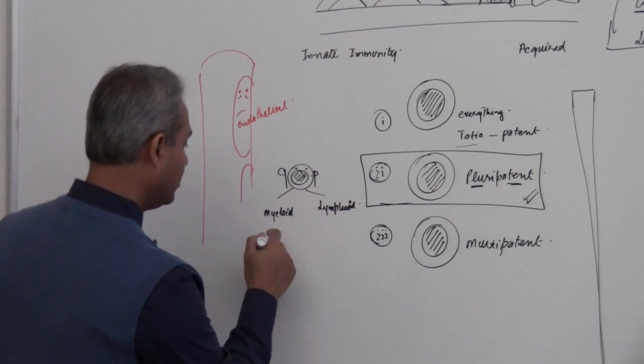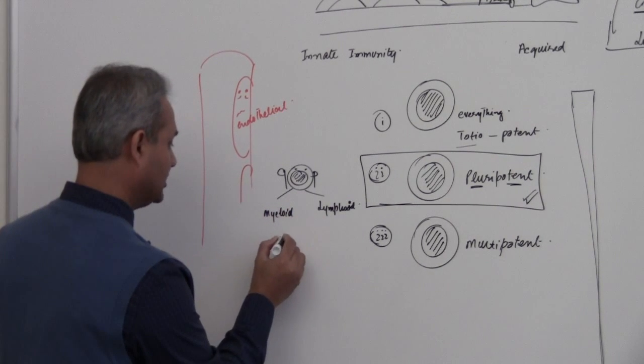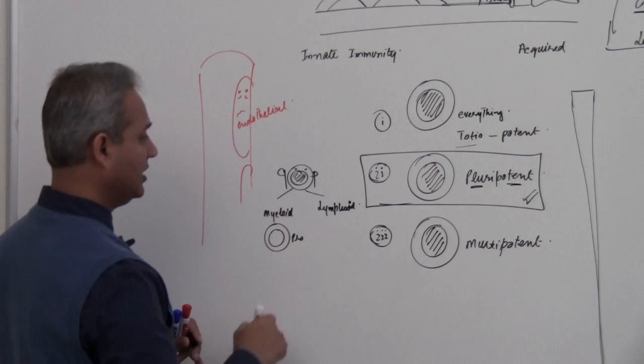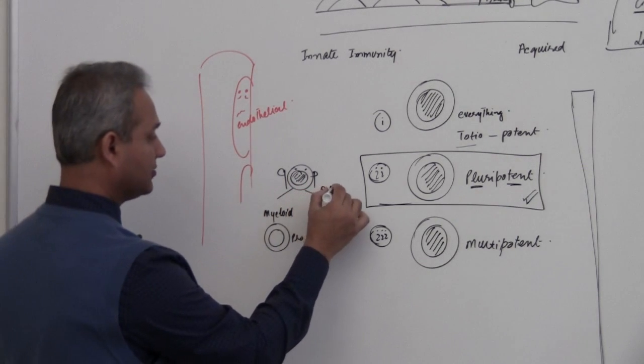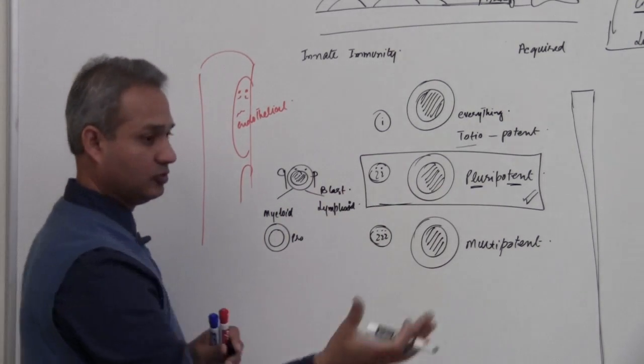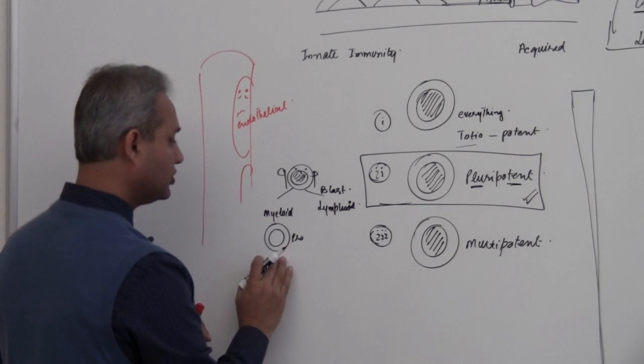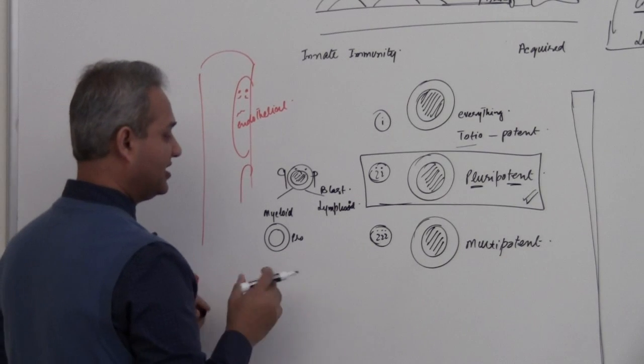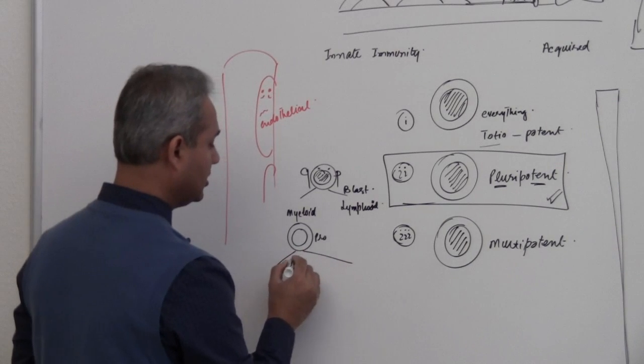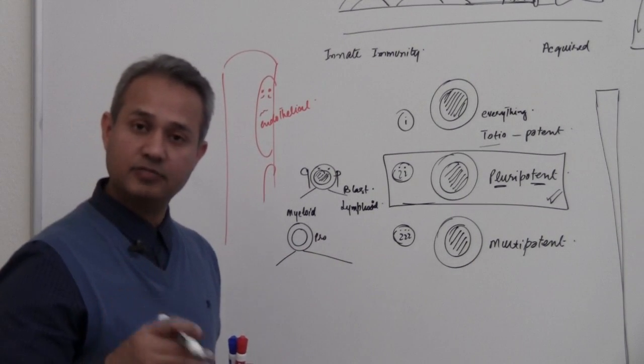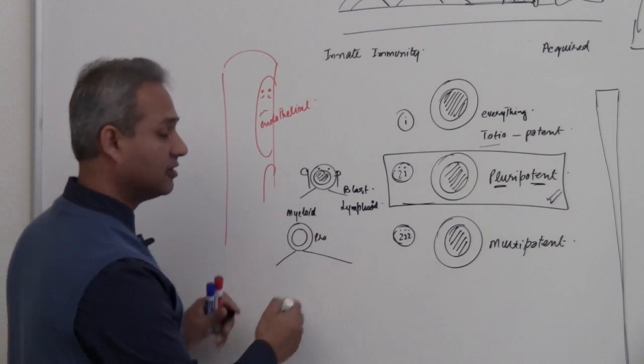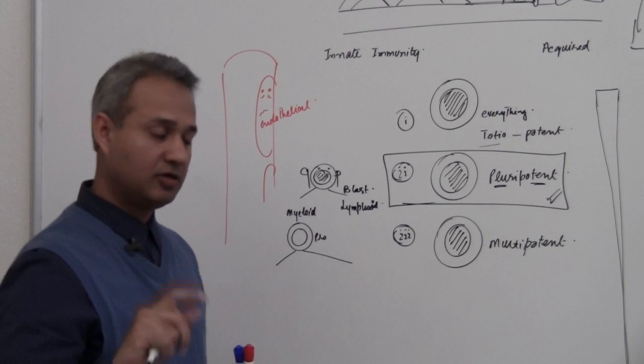On the other hand, this myeloid cell we call the myeloid progenitor. This pluripotent cell in the case of blood is called a blast cell. This progenitor cell, this parent cell, only makes cells of the myeloid lineage. Lineage means the inheritance, the generations.